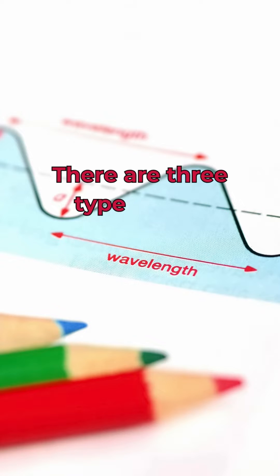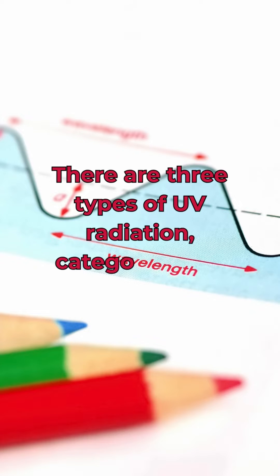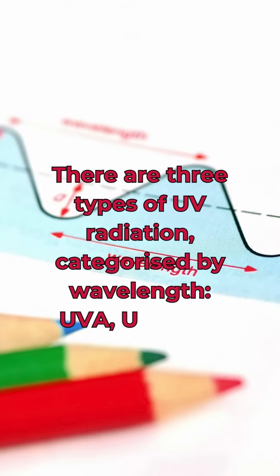There are three types of UV radiation categorised by wavelength: UVA, UVB and UVC.